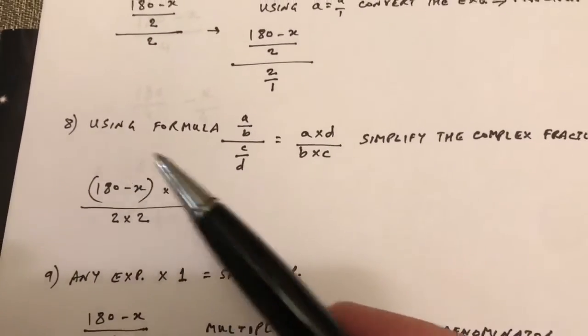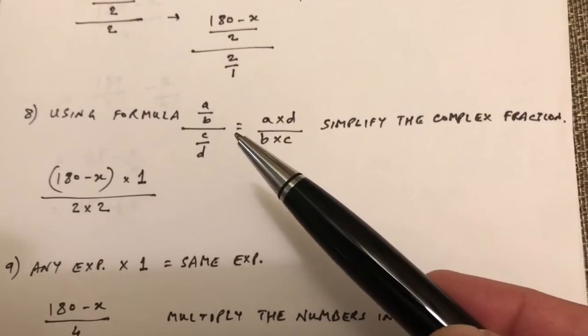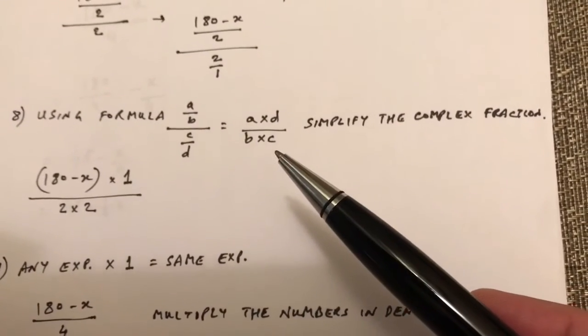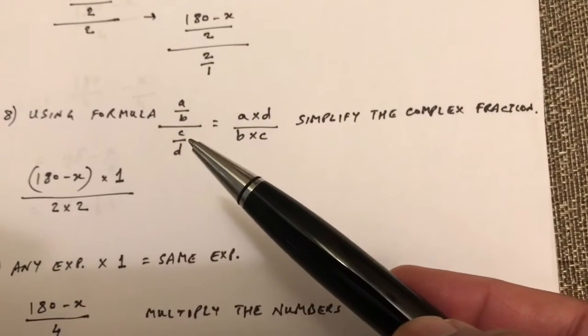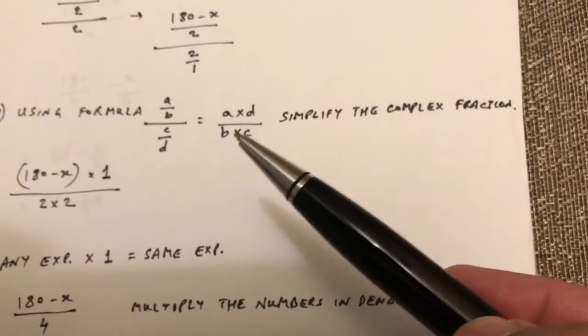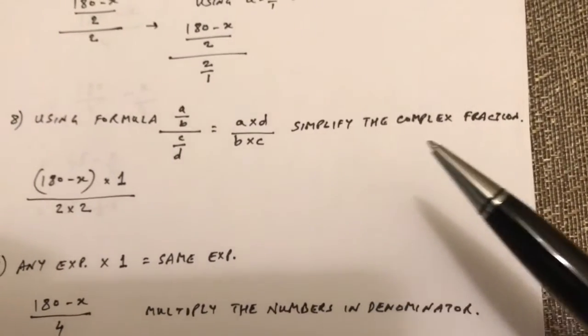And then what happens is, using the formula A over B, the whole thing divided by C over D equals A times D over B times C. Once again, A over B, the entire expression divided by C over D is the same as A times D over B times C. This is how we simplify the complex fraction.